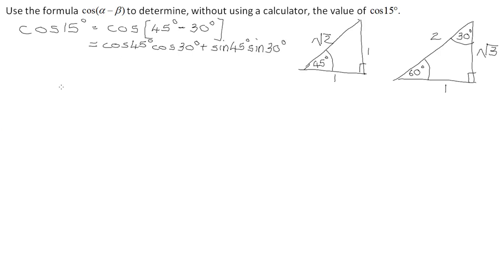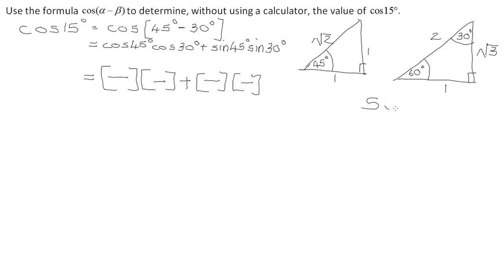Now we engage with the two triangles using the mnemonic: SOH for sin (opposite over hypotenuse) and CAH for cos (adjacent over hypotenuse). Cos 45° = 1/√2, cos 30° = √3/2, sin 45° = 1/√2, sin 30° = 1/2.